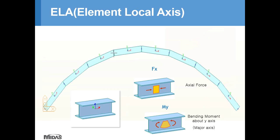Curved lines have different Element Local Axes. When you jump into design practice, you definitely need a cross section perpendicular to the proceeding curved line in each element to get axial force, shear force, or bending moment. If you use the Global Coordinate System, you cannot get true force or moment values from a non-perpendicular cross section to the curved line. So, Element Local Axis needs to be defined for correct force and moment values.